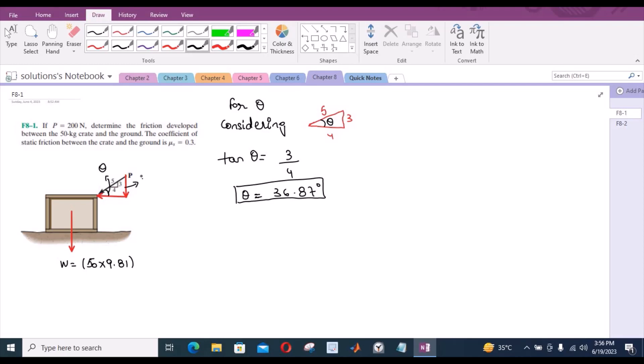This right here becomes P sin theta and this is P cos theta. Now for the frictional force: since the horizontal component of force P is directed towards the left, the frictional force should be directed towards the right. Let us label it as F. This right here is the frictional force. And the normal force would be drawn offset to the line of action of the weight to prevent the crate from toppling over.